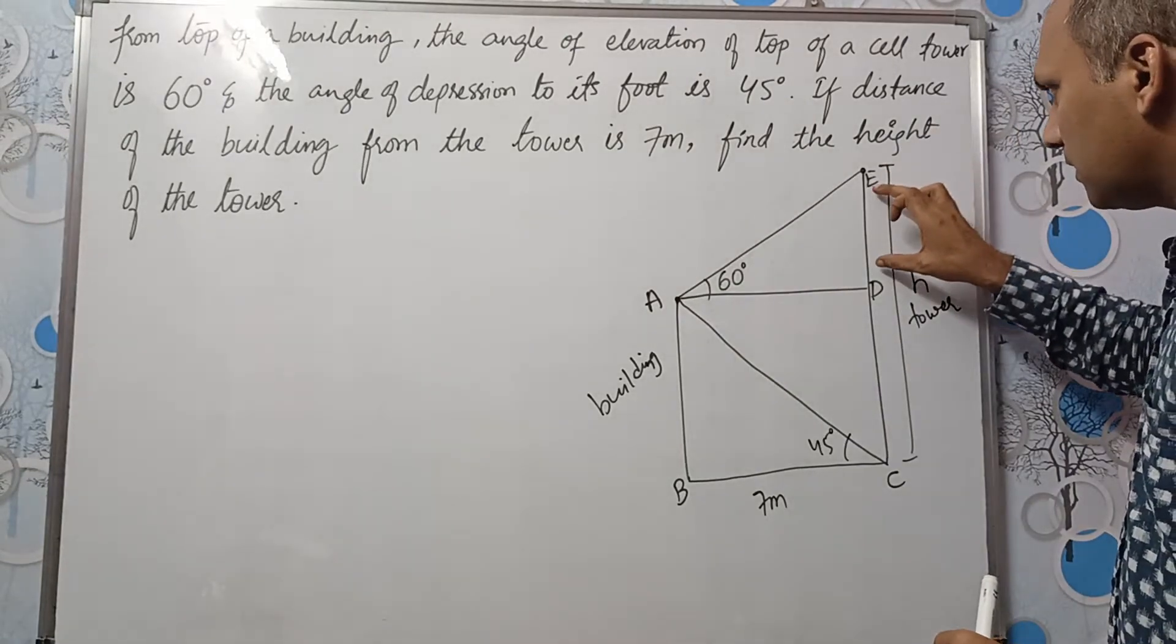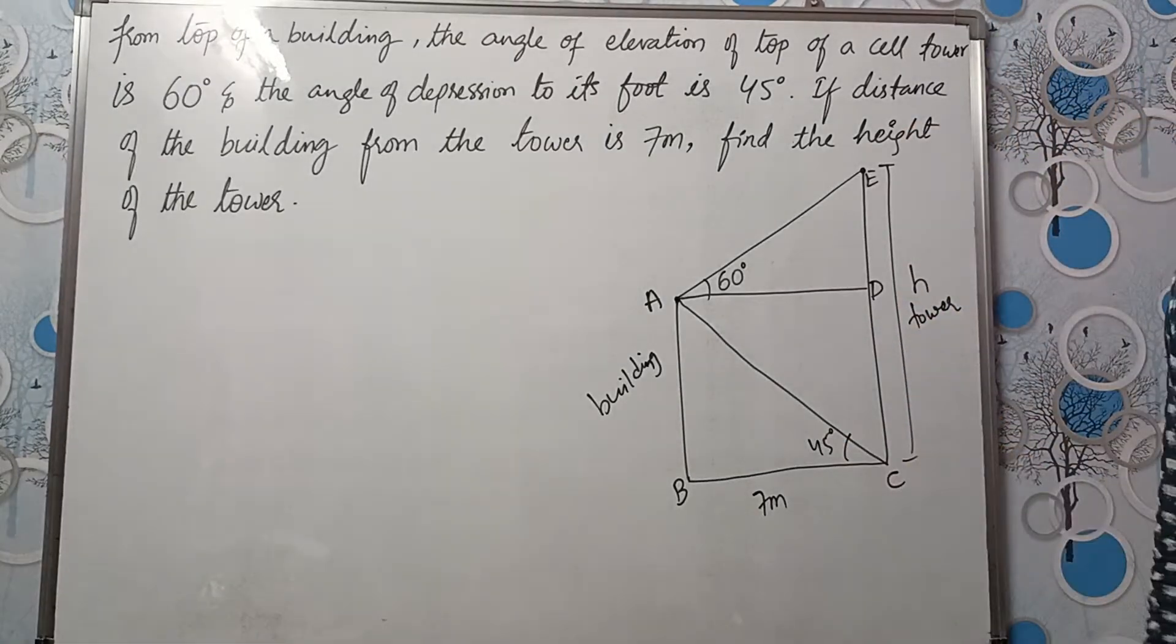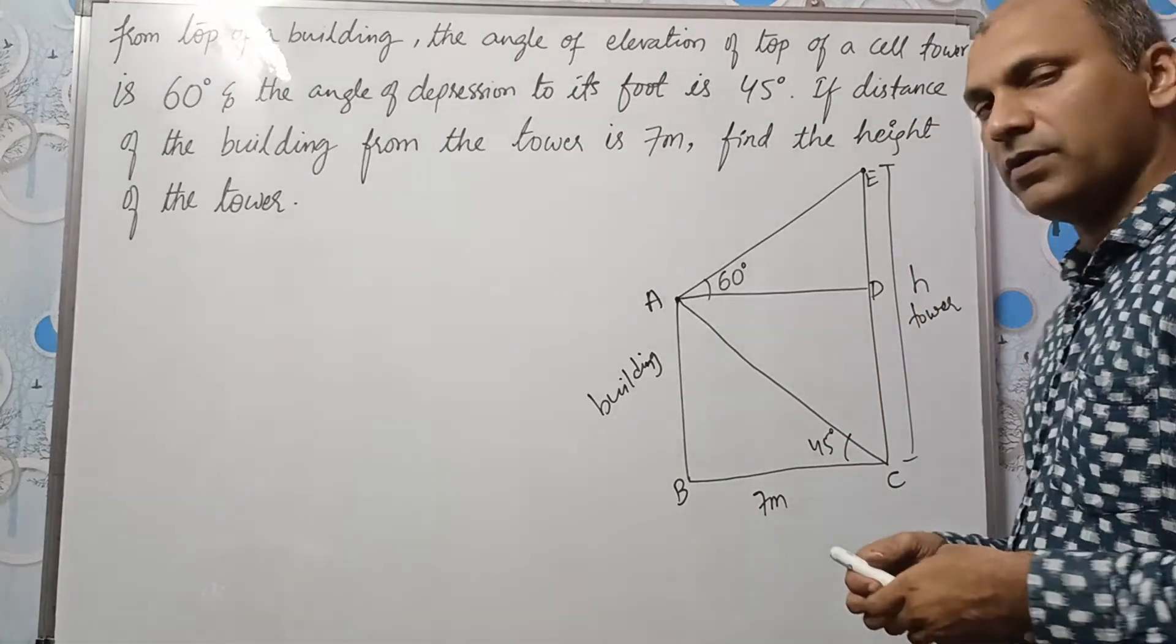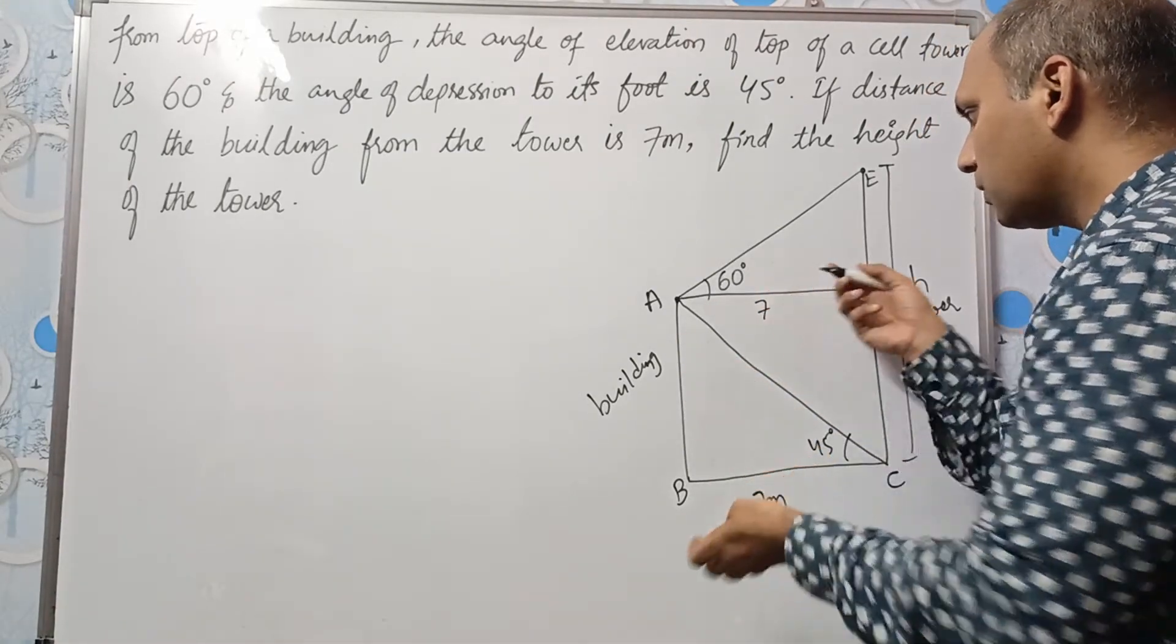Now if you take this triangle and find the value of ED and add that ED to 7, we'll get the height of the tower. This should be our approach. And this BC is 7. So this AD will also be equal to 7 meters.